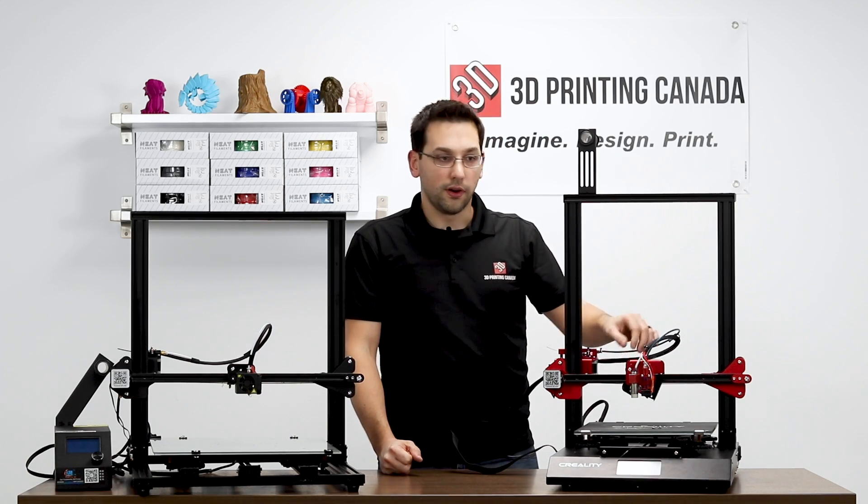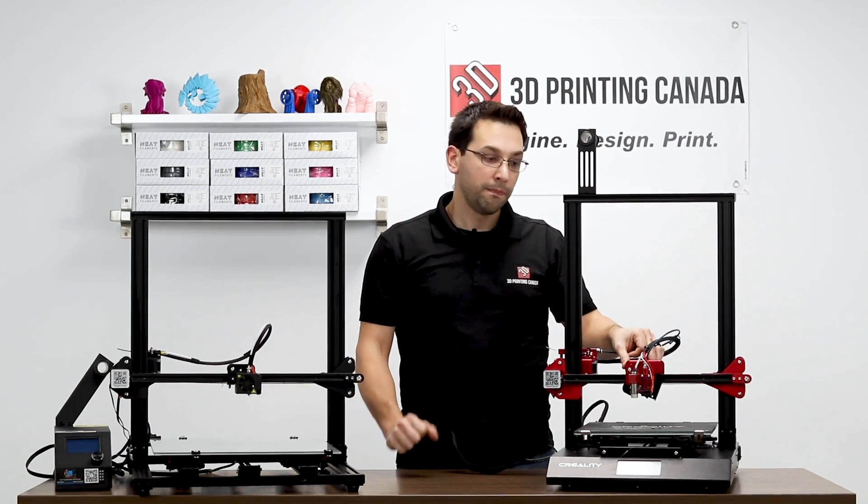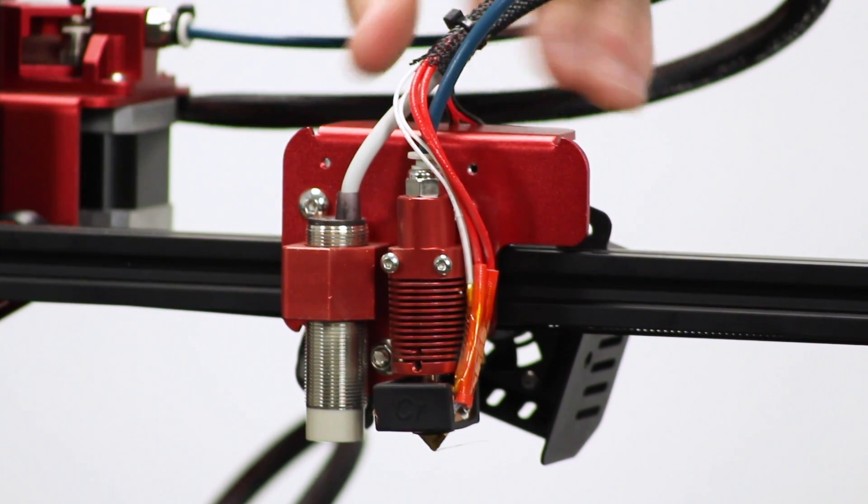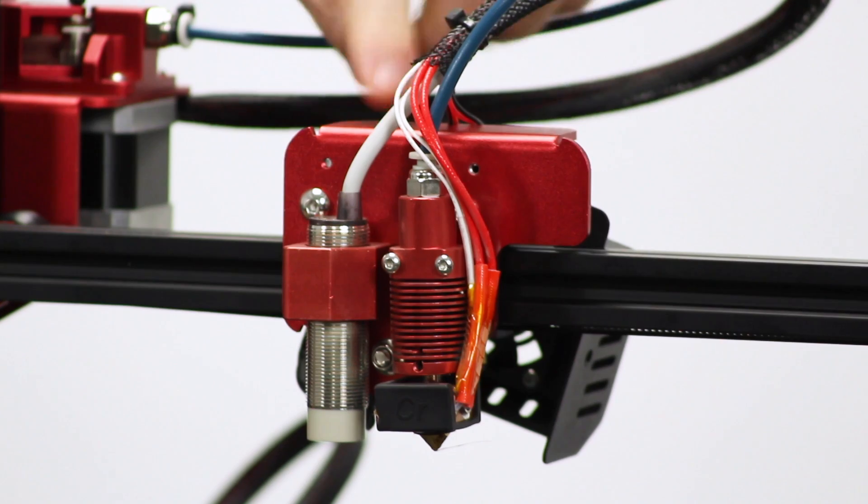So before I go too much further, I want to cover the same points I made over there. The X carriage is almost the same. I mean, it's clearly a much beefier bracket. It's much wider. It's got this little ledge along the top.